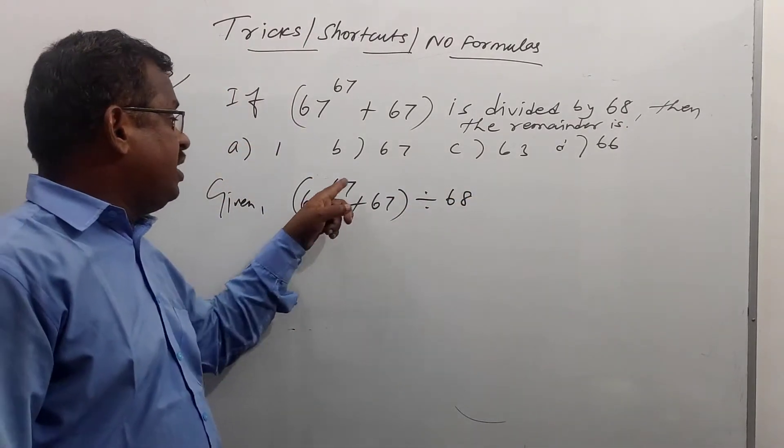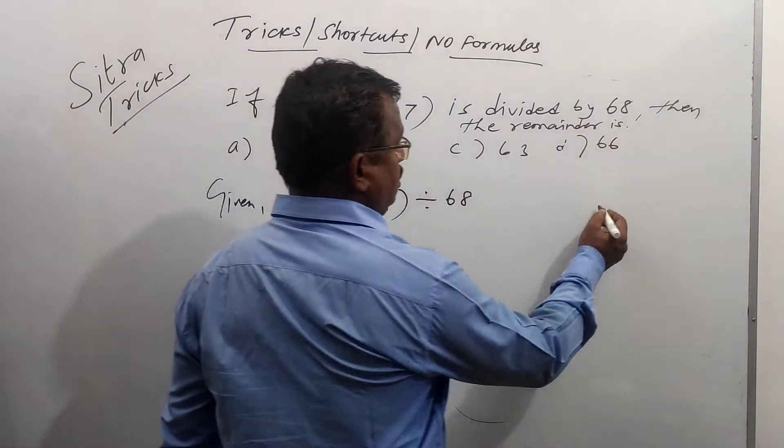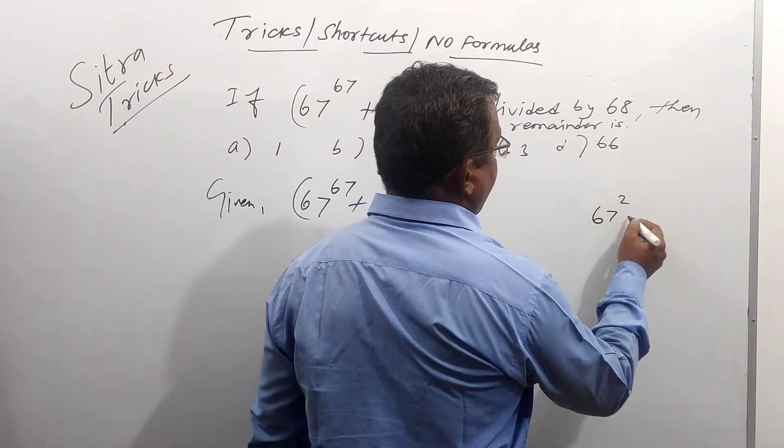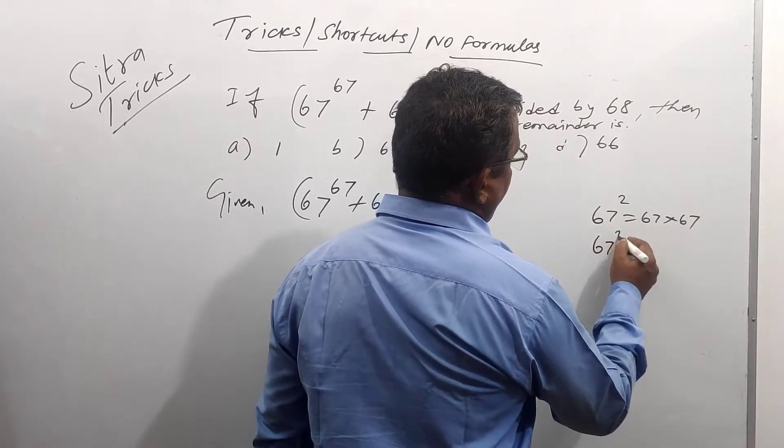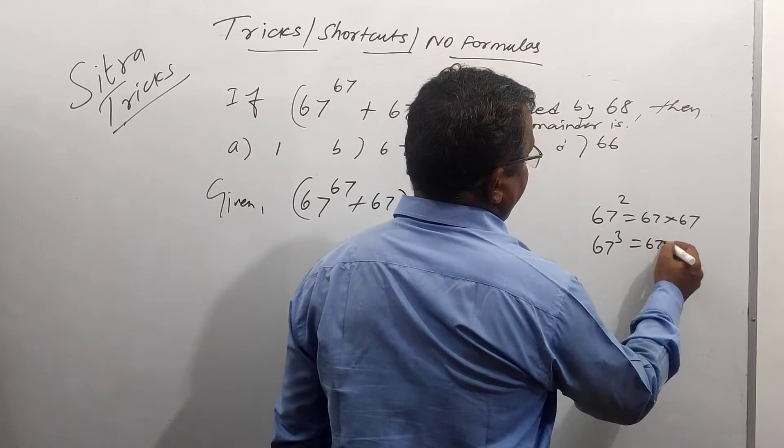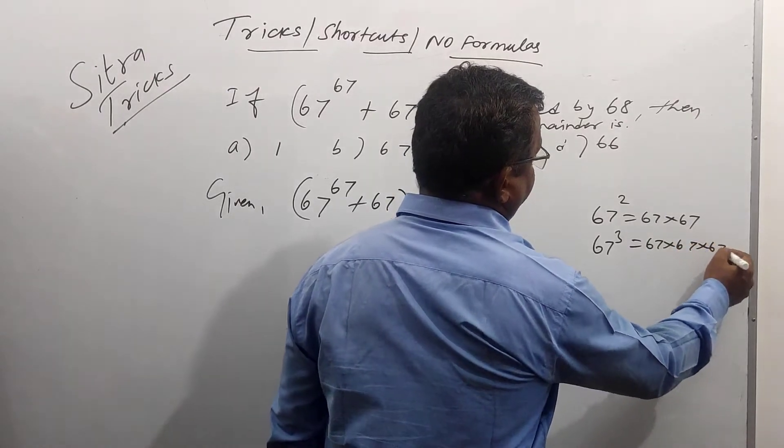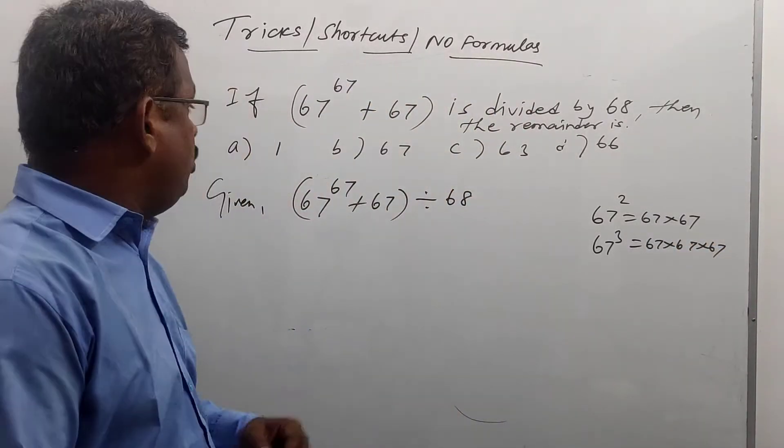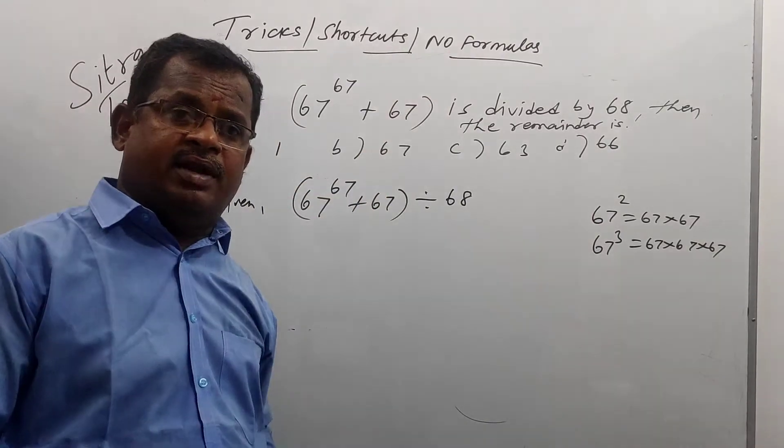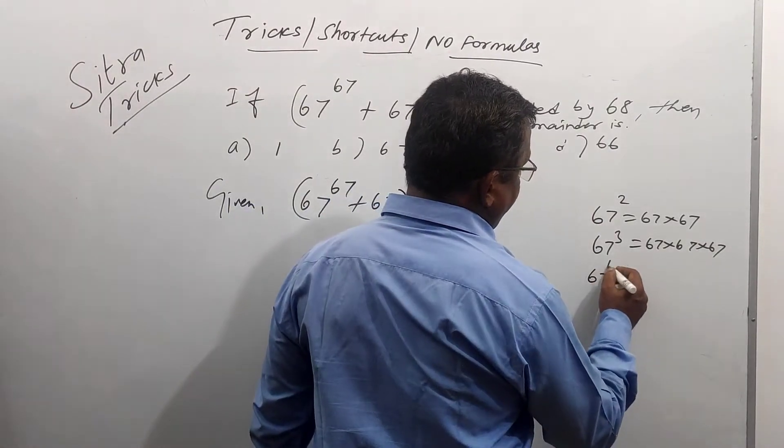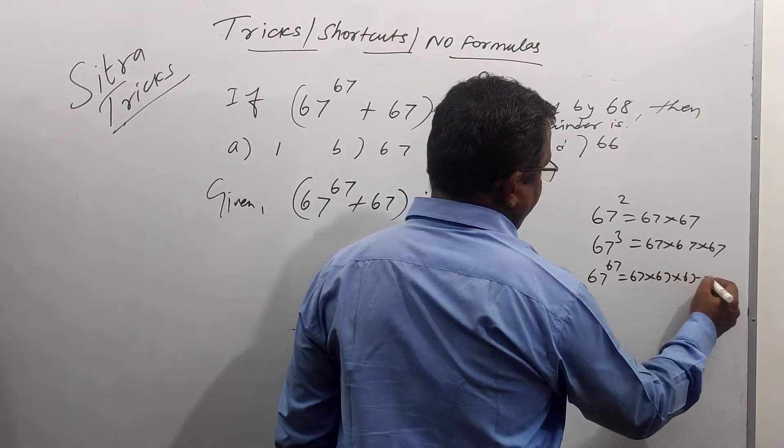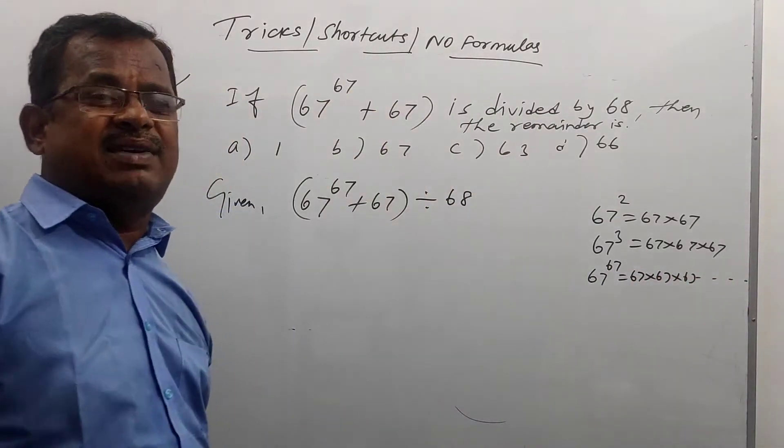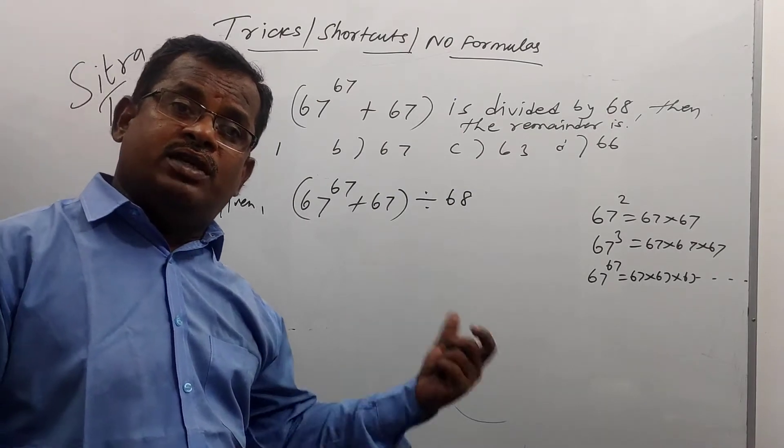67 into 67, how much you know? 67 whole square means 67 into 67. 67 whole cube means 67 into 67 into 67. How to find the value of 67 power 67? 67 whole power 67 means what? 67 into 67 into 67, going up to 67 times.